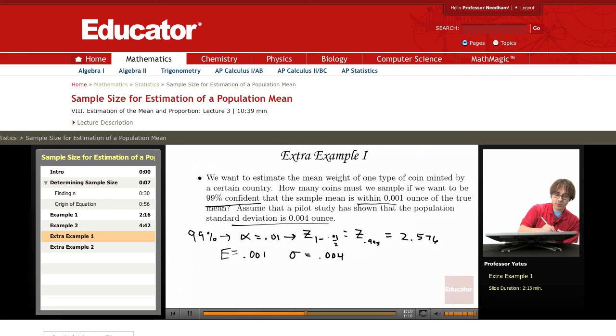Now what we want to do is we want to find n. So again, I'm taking z squared times sigma squared over e squared.